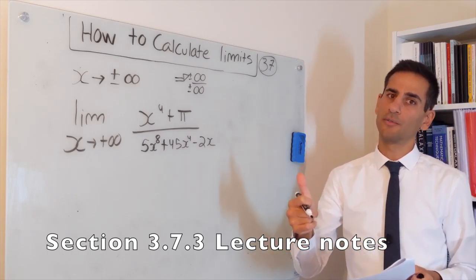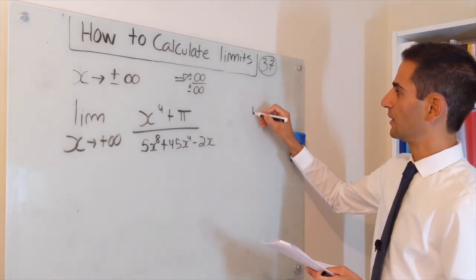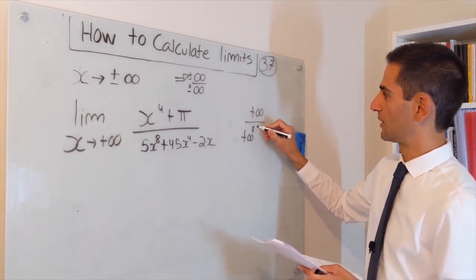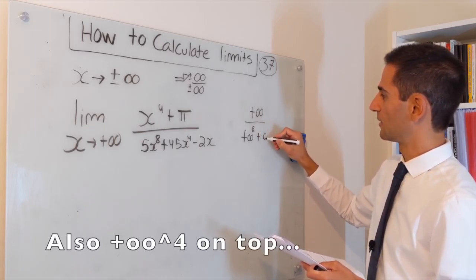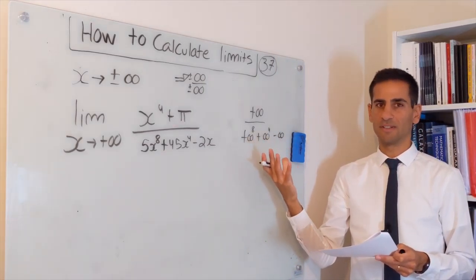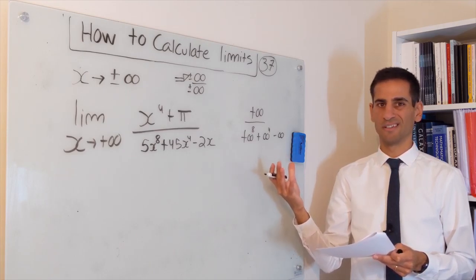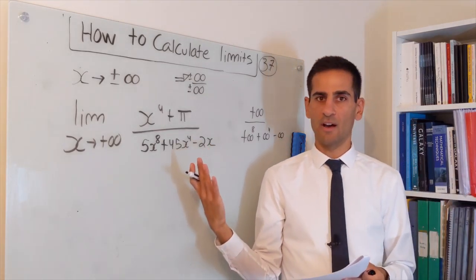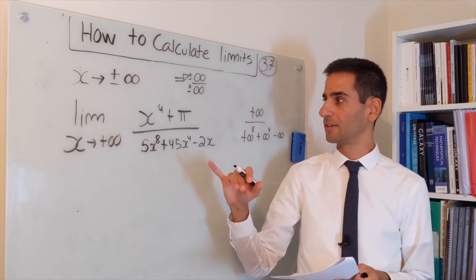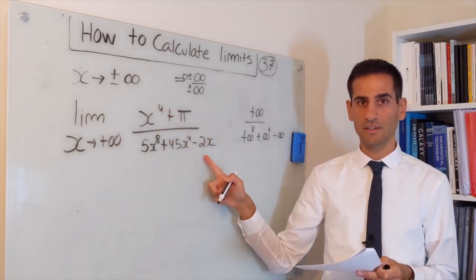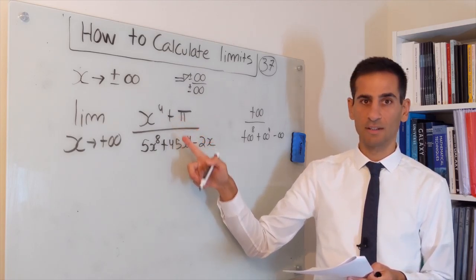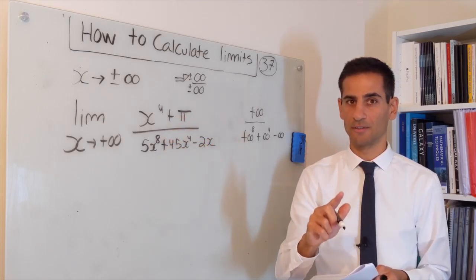The problem with method number one — substituting in — is you end up with plus infinity over plus infinity to the power of eight, plus something, infinity to the power of four, minus infinity. This is not something we can operate with very easily. For some of you, you may have enough mathematical intuition to realize that as x goes to plus infinity, both things go to infinity, but actually this term is going to go faster.